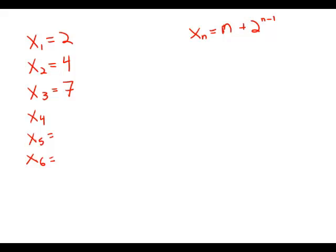What is the difference between the 6th and the 5th terms of the sequence 2, 4, 7 dot dot dot whose nth term is n plus 2 to the n minus 1?